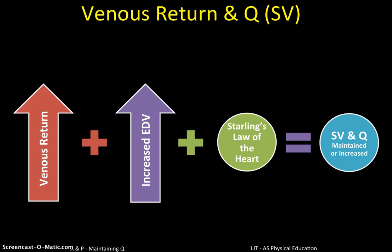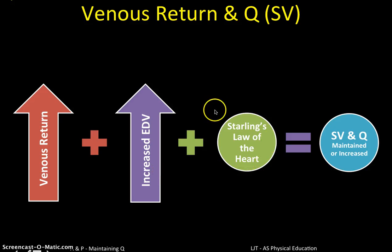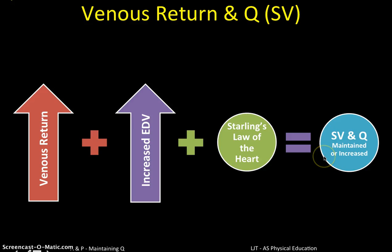To sum up: if we can maximise venous return — getting a lot of blood returning to the heart — we increase EDV, which stretches the cardiac fibres. Starling's Law of the Heart comes into play, producing a much more powerful contraction, increasing and maintaining stroke volume and cardiac output. They all fit together and rely on each other.